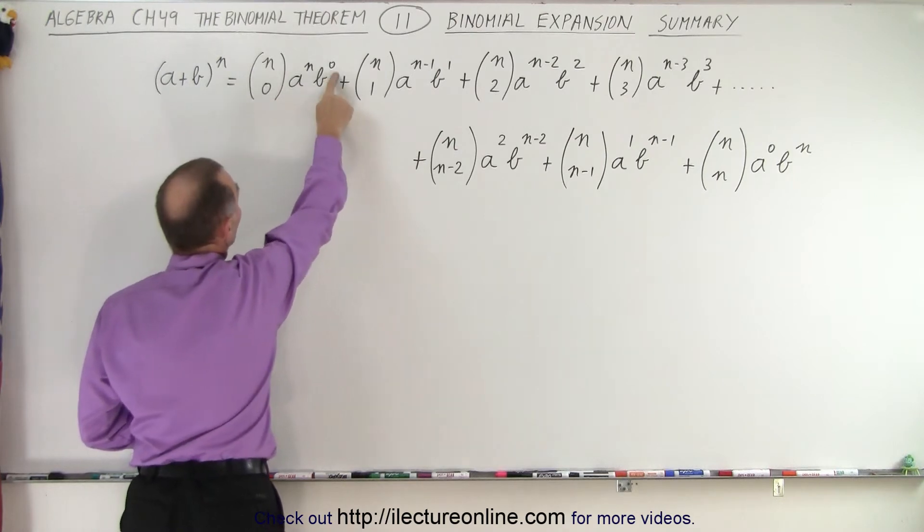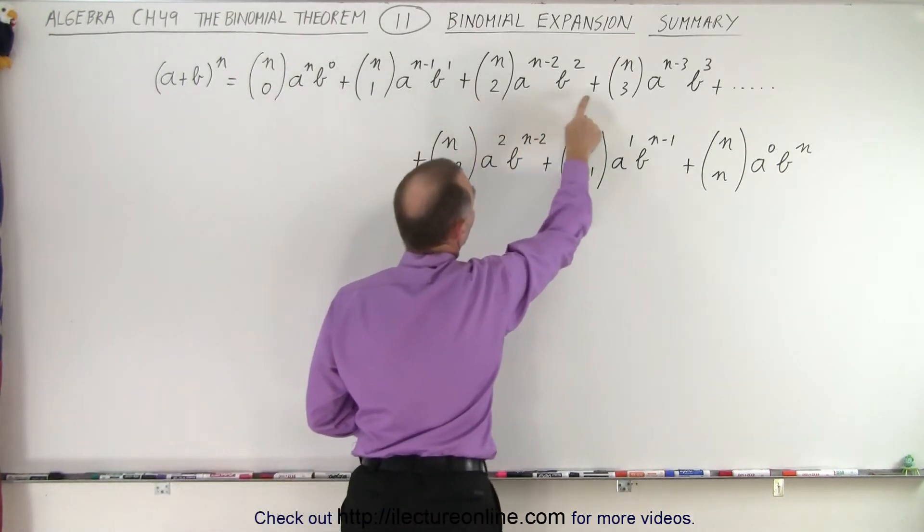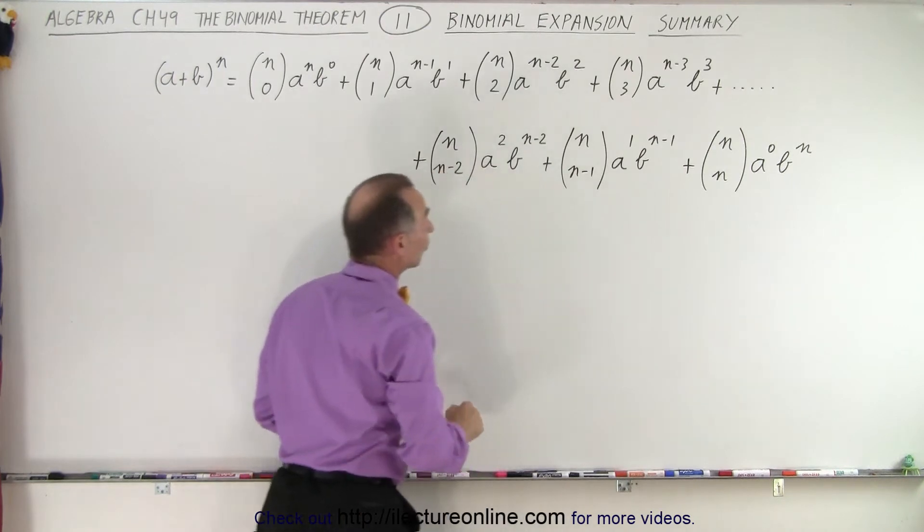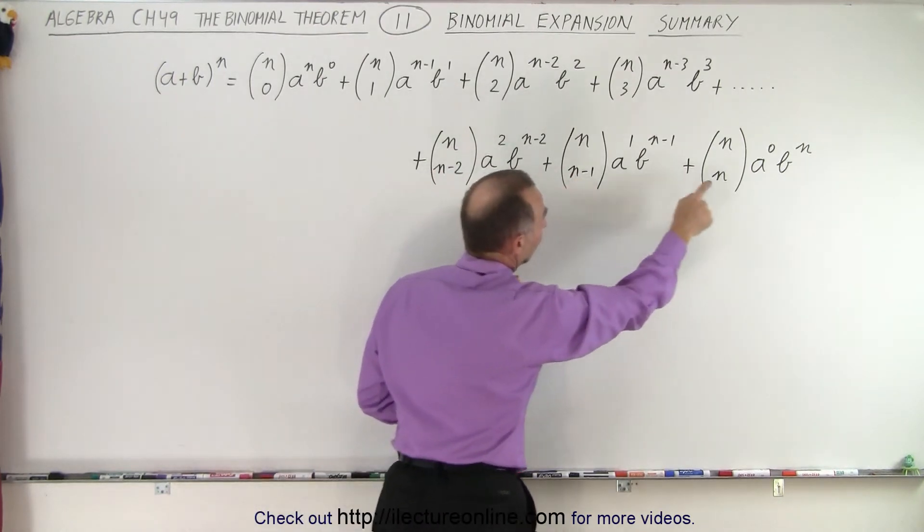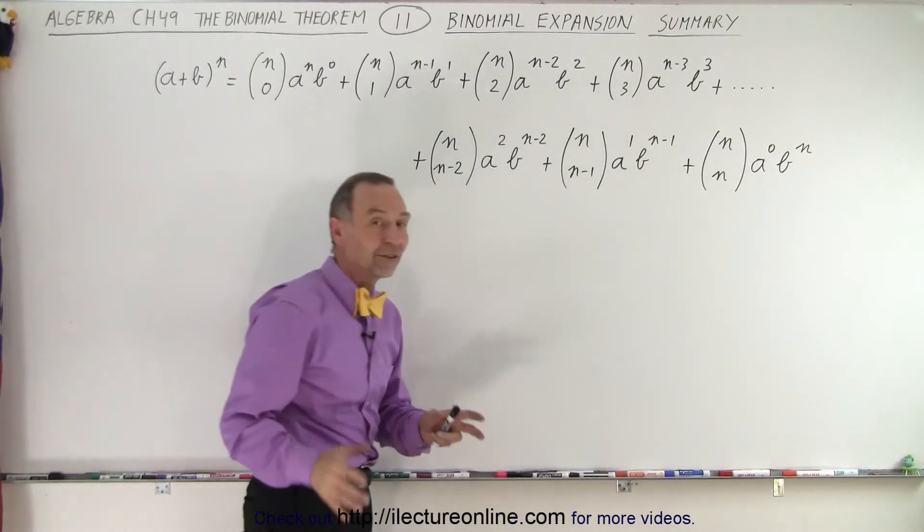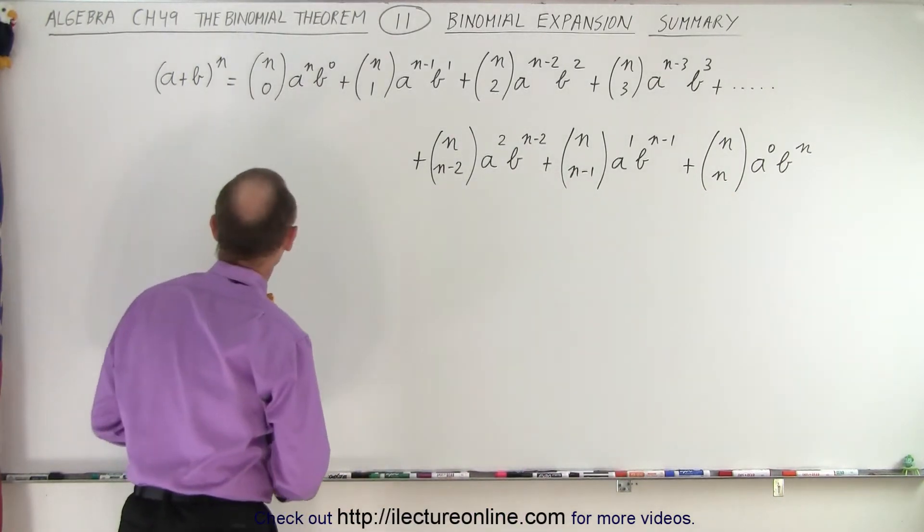So here we have b to the zero power, b to the first power, b to the second power, b to the third power, and so forth, all the way to n minus 2, n minus 1, and n that becomes the exponent of the second component, the second term in our binomial.